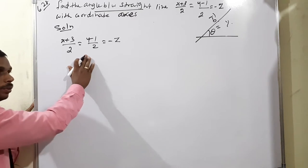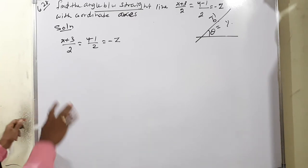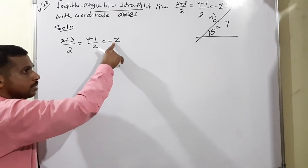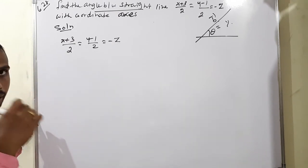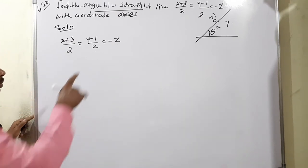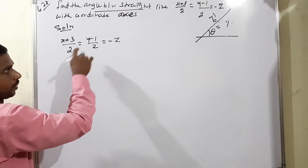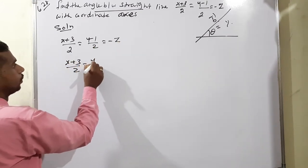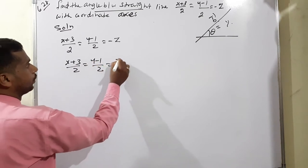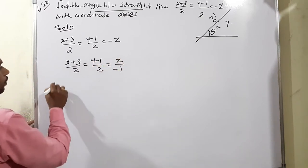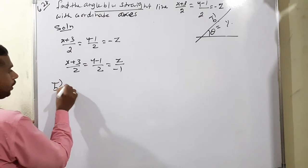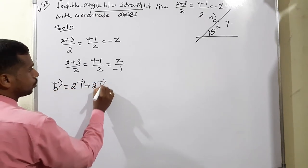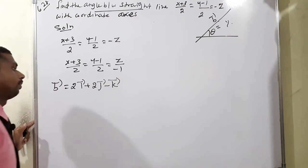Before finding the B vector, according to the Cartesian equation, the main terms starting with x, y, z — there is a negative sign in the last term. So first we have to rearrange it: x plus 3 by 2 equals y minus 1 by 2 equals z by negative 1. From this, B vector equals 2i plus 2j minus k.